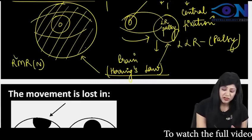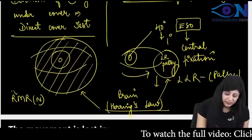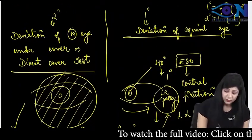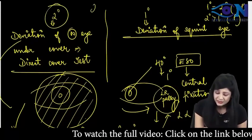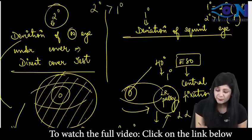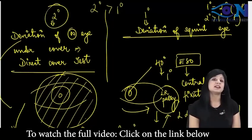And this lateral rectus was having the palsy while medial rectus is normal. So obviously this will move more. When this will move more, therefore I will get more of secondary deviation. And that is the reason why secondary deviation is always more than primary deviation in cases of paralytic squint.